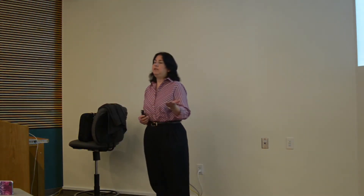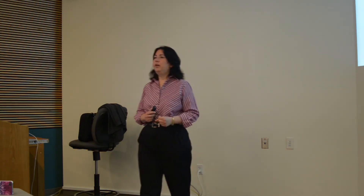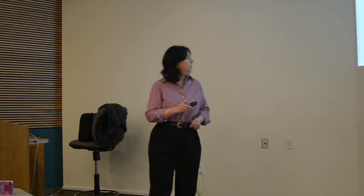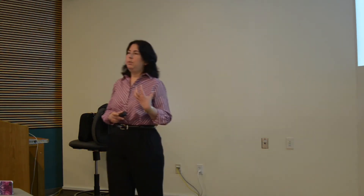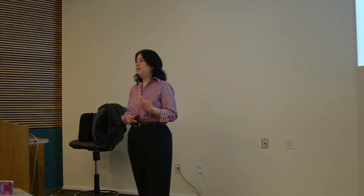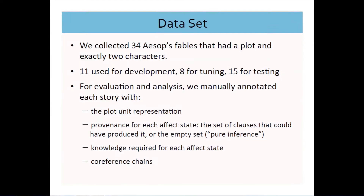We manually generated the plot unit graph for each story and kept track of the provenance for each affect state — which clause in the original story it came from — so we could see what kind of phrases spawn different affect states. We also hypothesized what kind of world knowledge the computer would need in theory to perfectly generate these affect states. And the last thing we did was generate perfect co-reference chains, since these fables have a lot of pronouns that are very difficult for a computer to resolve — we annotated these by hand, though we also did an analysis incorporating an automated approach.